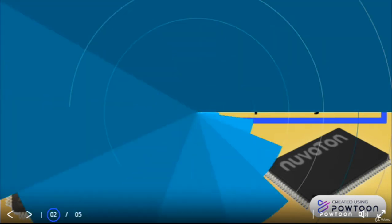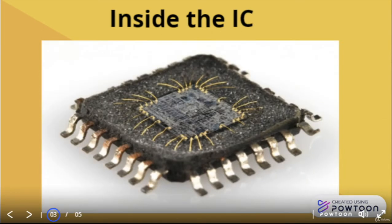Inside the IC, this is what it looks like. The IC is made from a semiconductor material — germanium or silicon — that has a circuit built inside it. This is a very complex circuit that exists inside the IC.